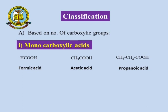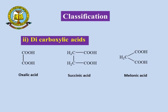The second type of classification is dicarboxylic acid, which carries two carboxylic acid groups. Examples include oxalic acid (COOH-COOH), where the two carboxylic acid groups are directly attached to each other. Succinic acid has two carboxylic acid groups separated by two CH₂ groups. Malonic acid has only one CH₂ group between the two carboxylic acid groups. All these — succinic acid, oxalic acid, and malonic acid — carry two carboxylic acid groups, so they are called dicarboxylic acids.